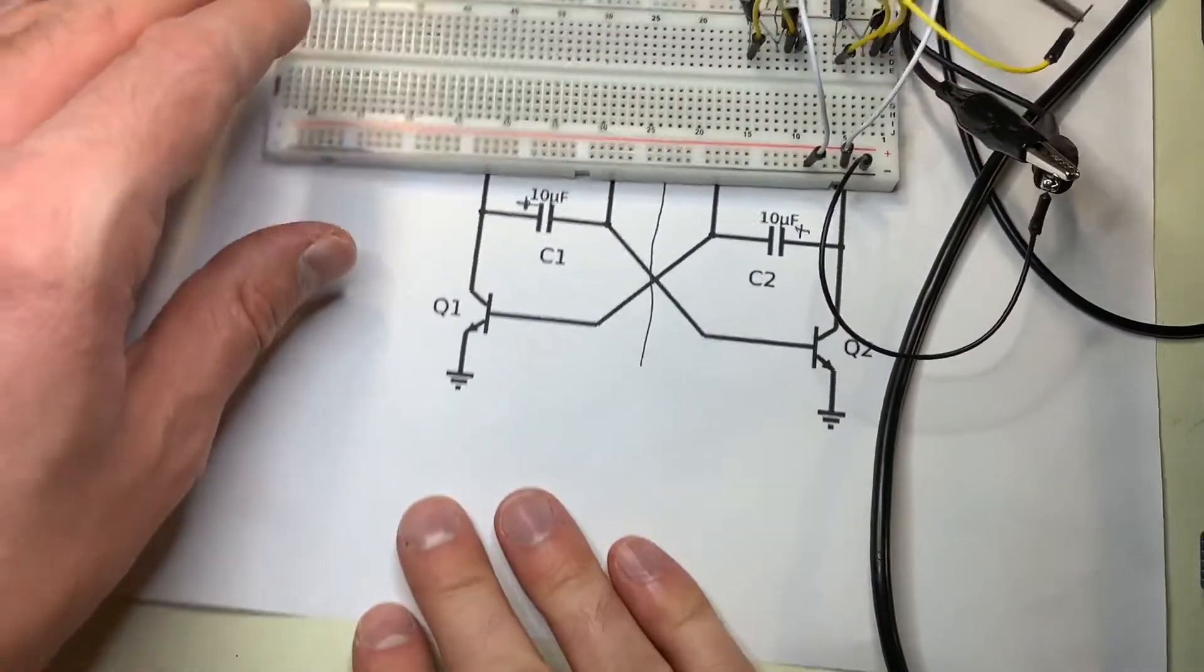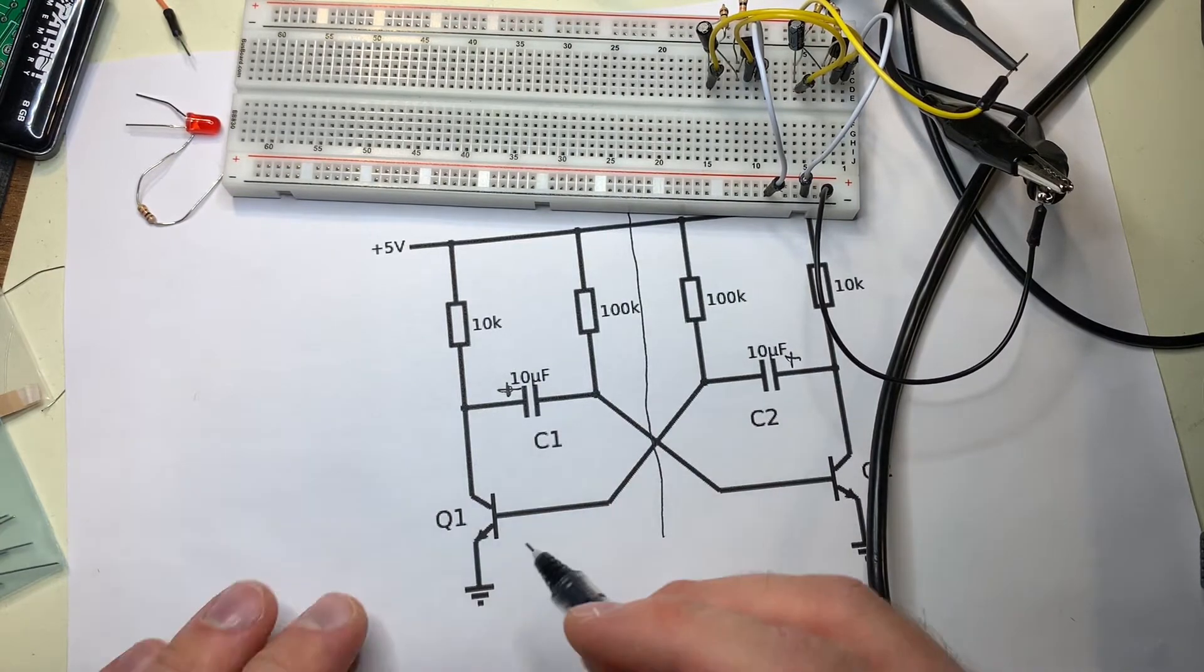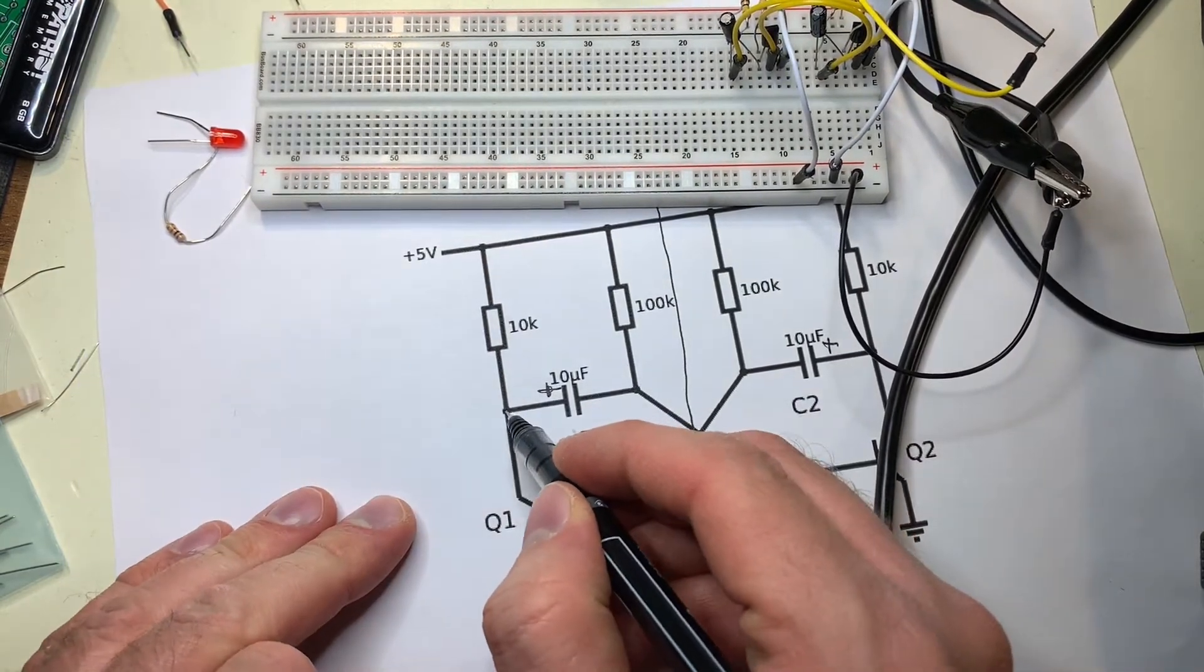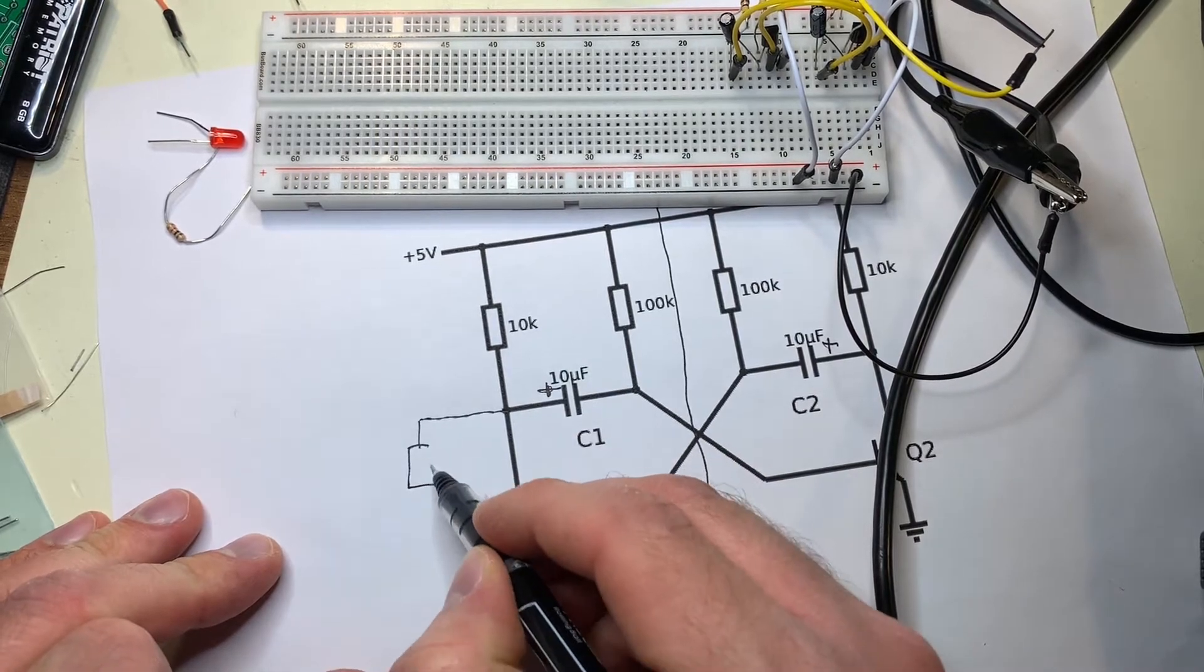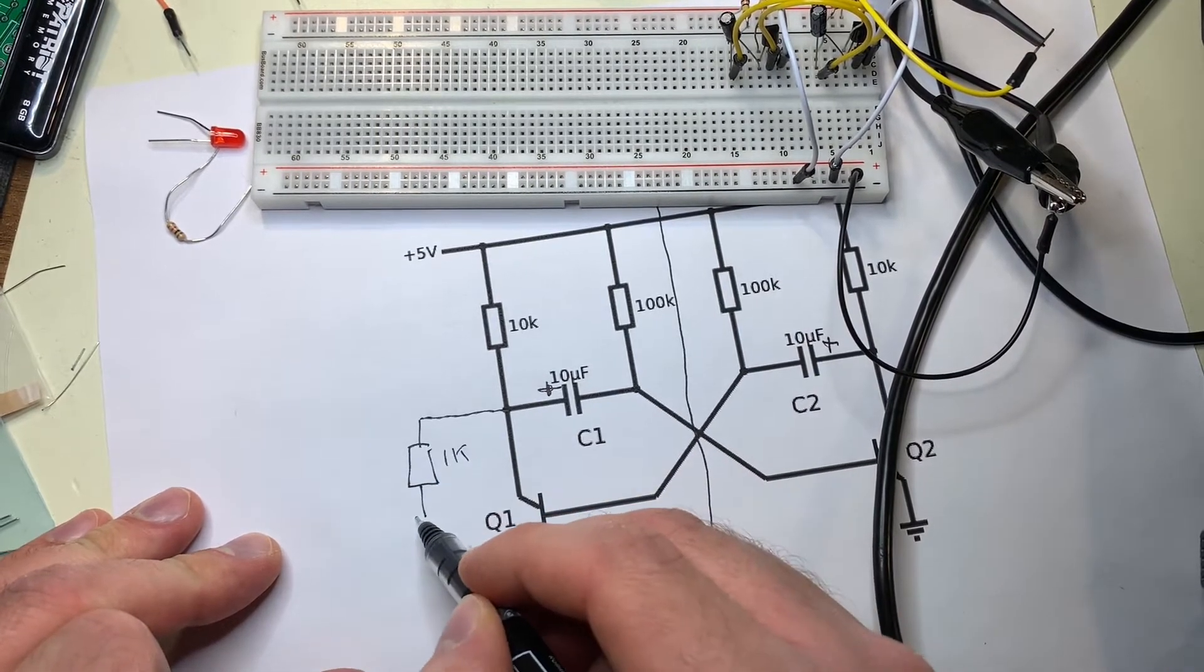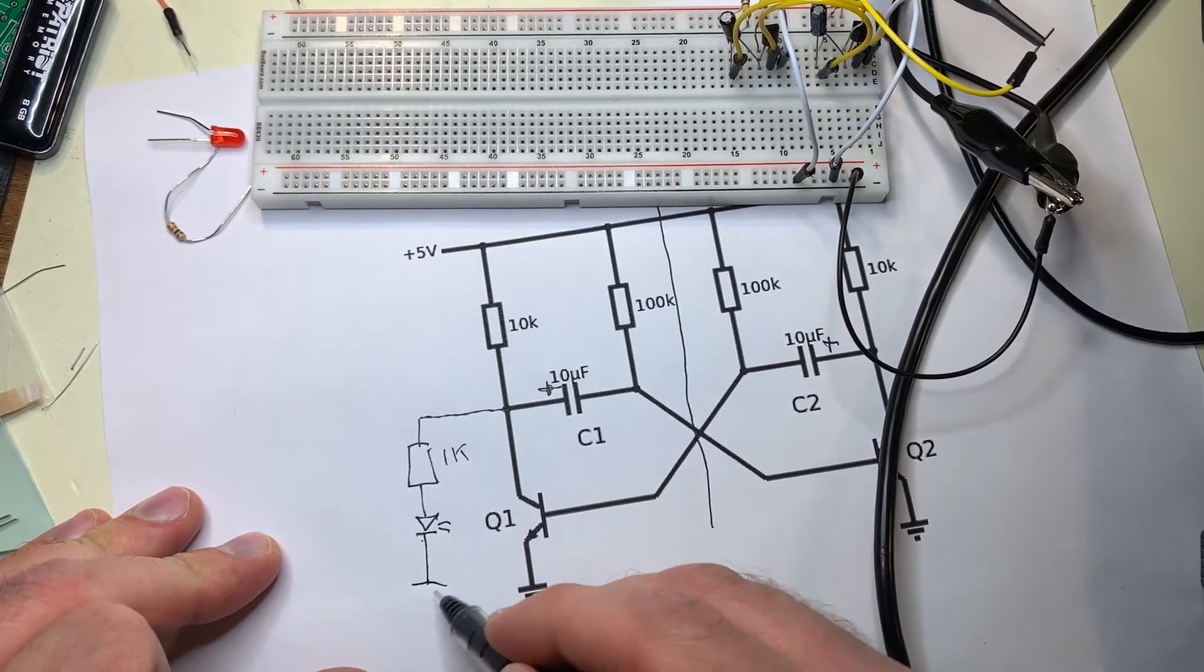So what I didn't show on this schematic is I added in a resistor or a resistor and an LED. Specifically, I added them in right here.